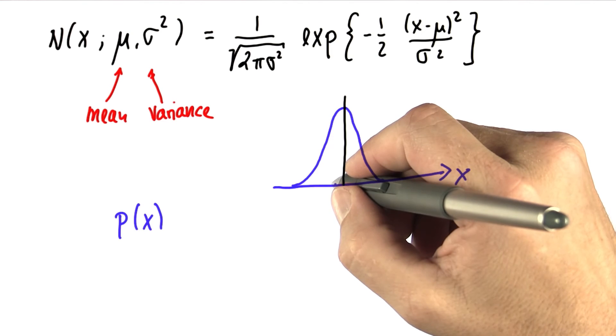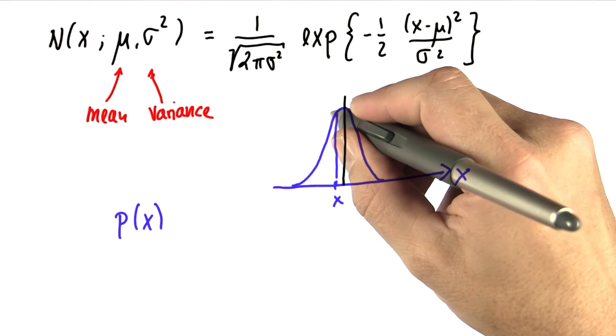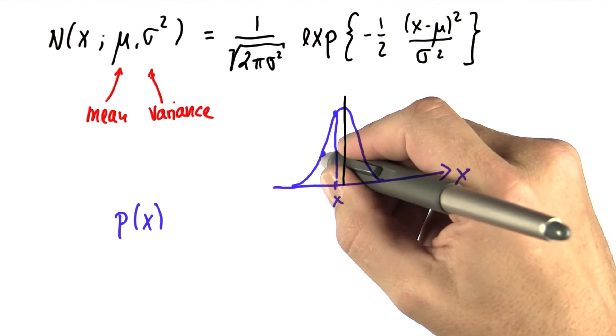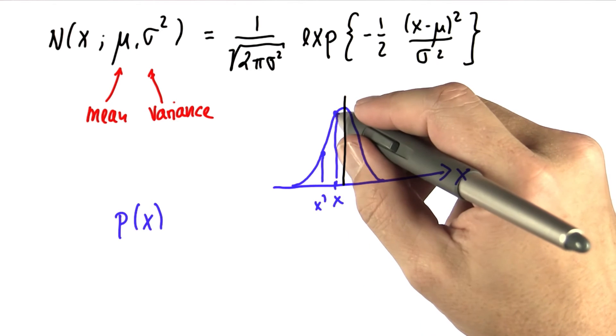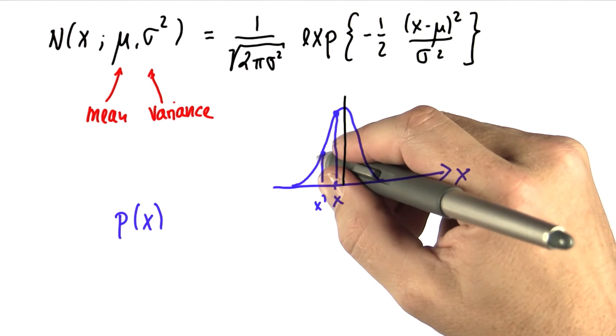So a value x that has twice a higher bar than some other value x prime will have twice as much of a probability of being drawn.